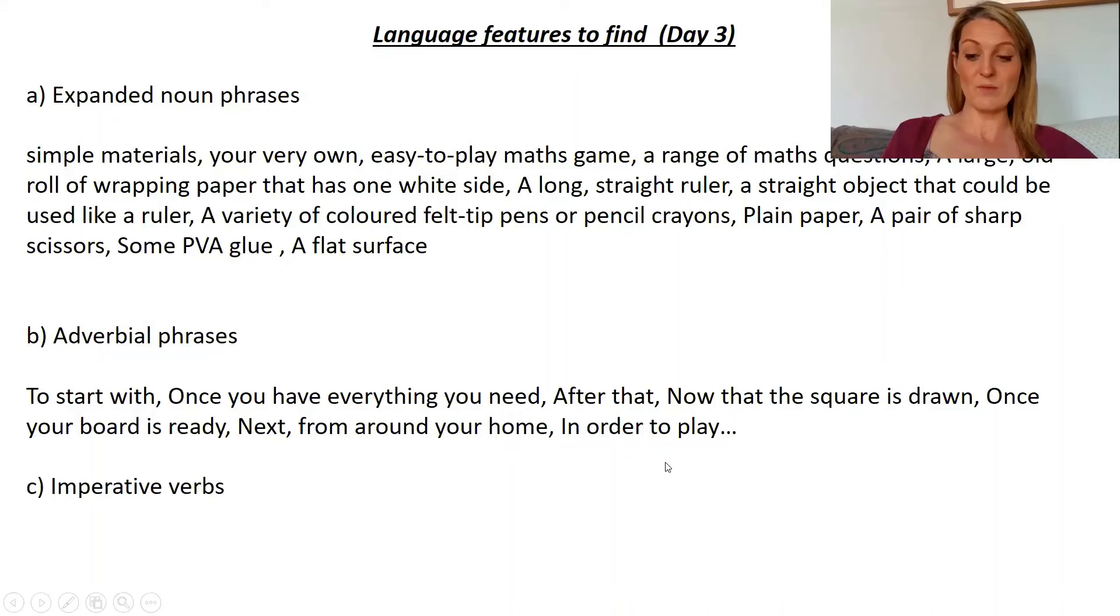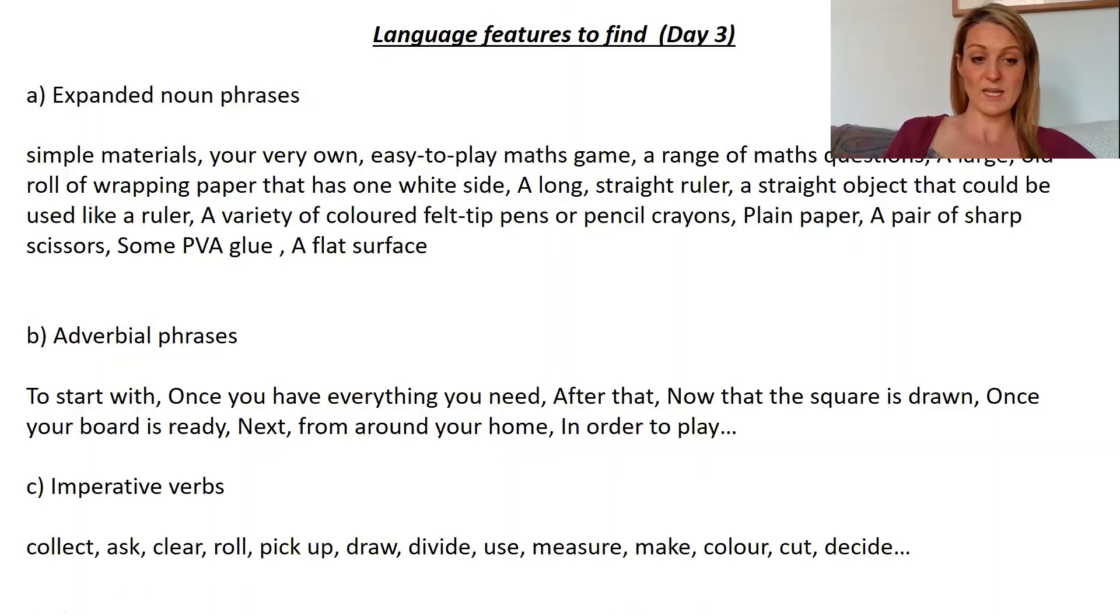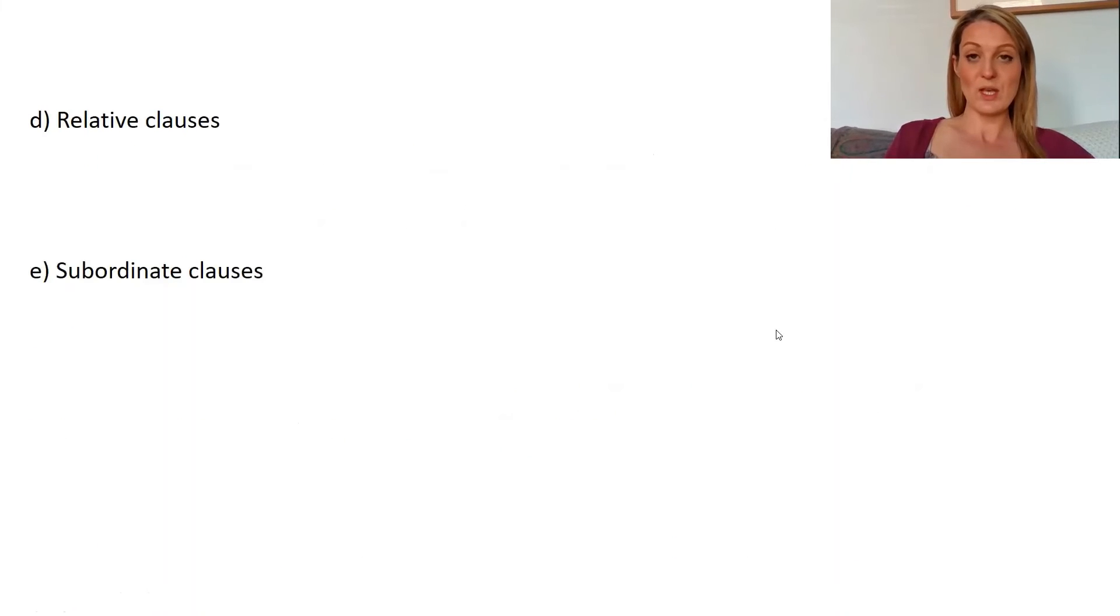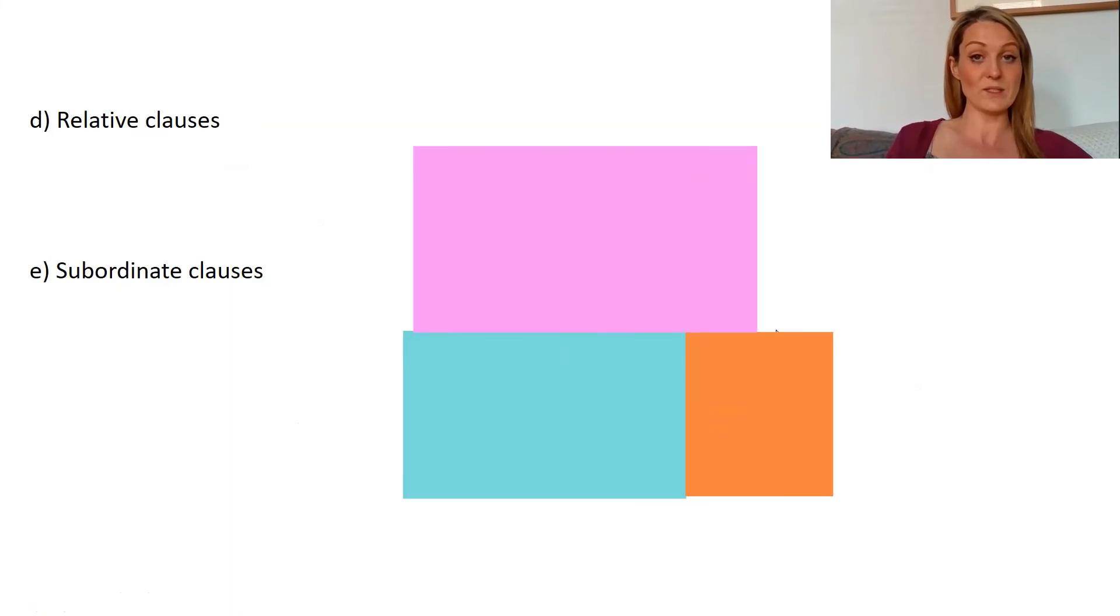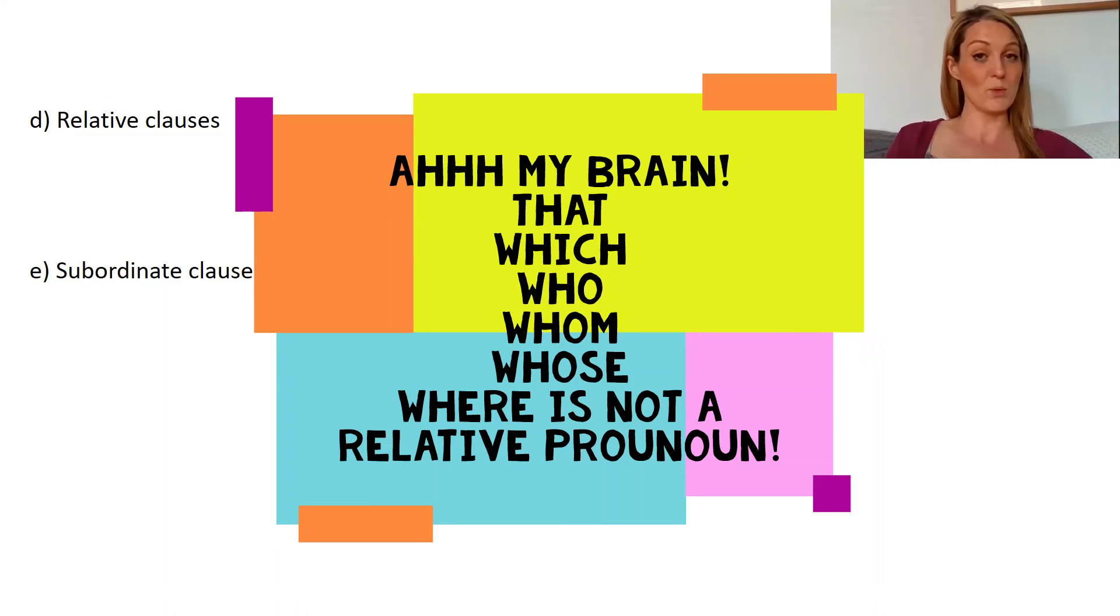And then we've got imperative verbs, so those bossy verbs that tell you what it is that you need to be doing. These are the ones I found: collect, ask, clear, roll, pick up, draw, divide, use, measure, make, color, cut, decide. So in instructions it's all about you're telling someone what they need to do so using lots of imperative verbs. Next up we are looking at relative clauses. So they are those subordinate clauses which start with relative pronouns.